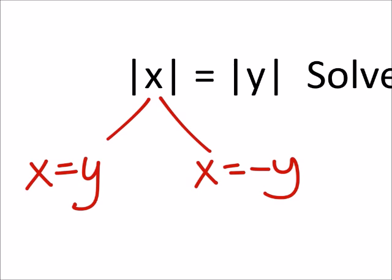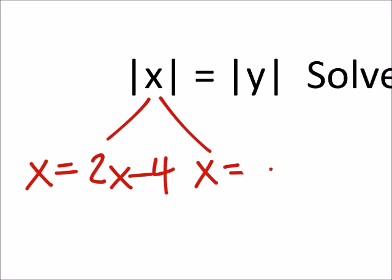Right? It's likely you're going to see y as an expression. So, if y was 2x minus 4, then this one would be negative 2x minus 4, which just means we're changing the signs on both of those terms.